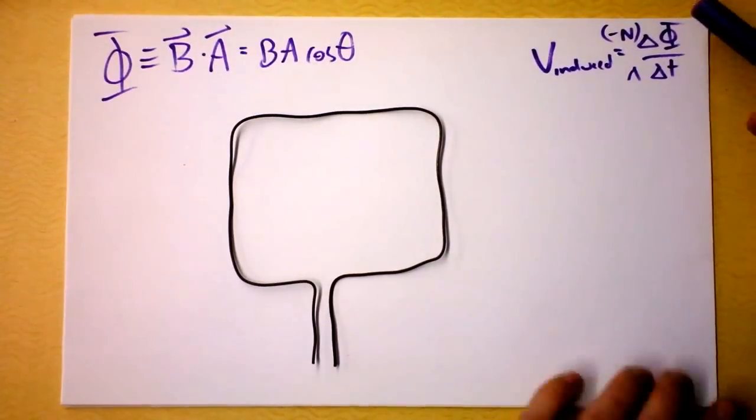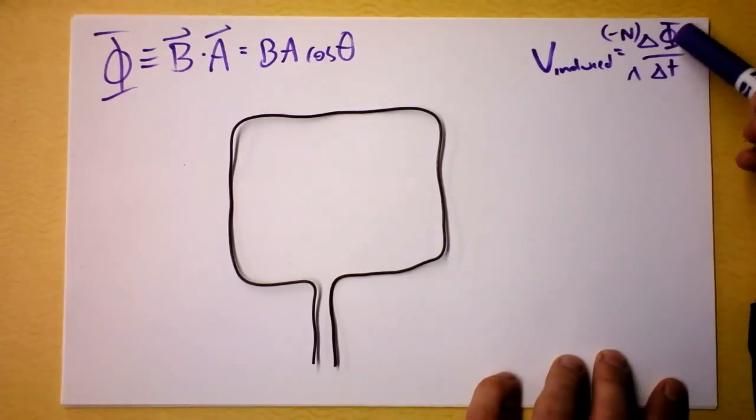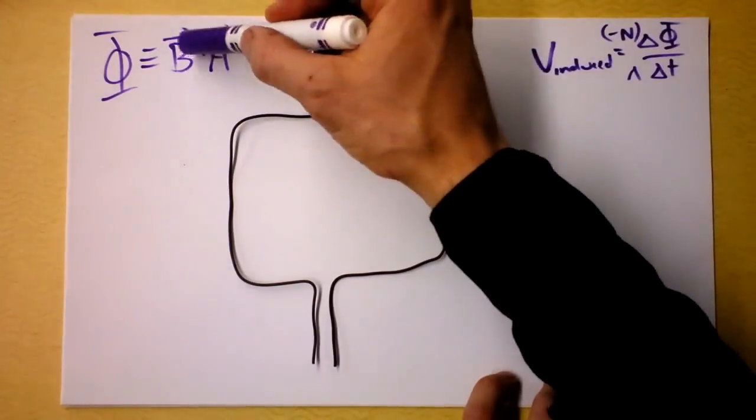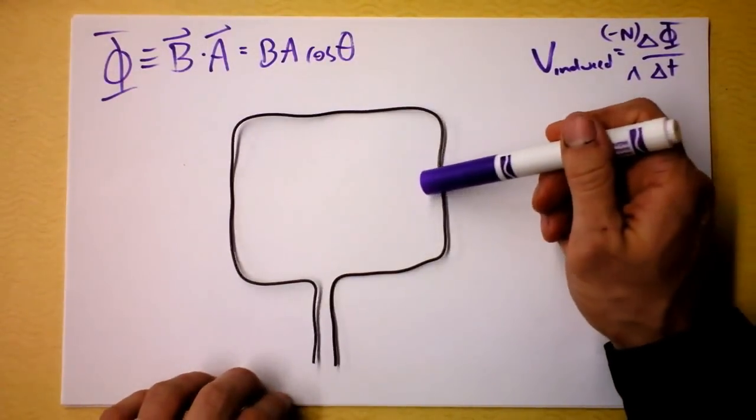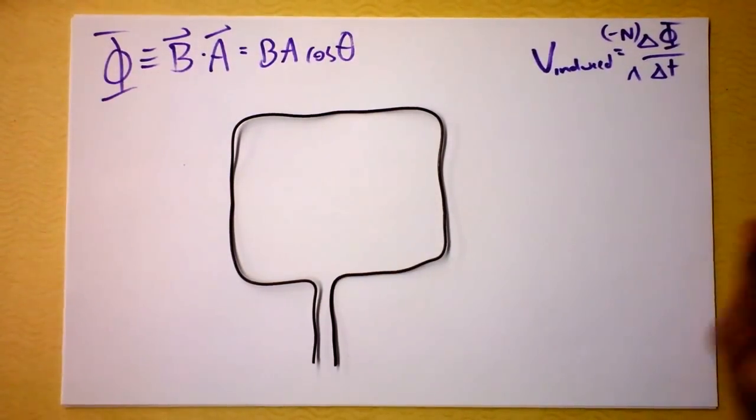Sometimes the magnetic field's not going to be uniform everywhere, so you can use the average magnetic field here to find the flux going through the loop. If it's really big here and zero here, you could find the average and work with that. That'd be fine.